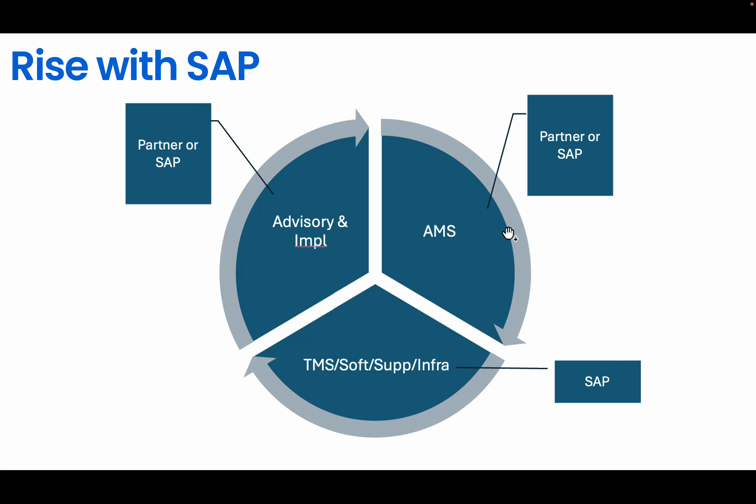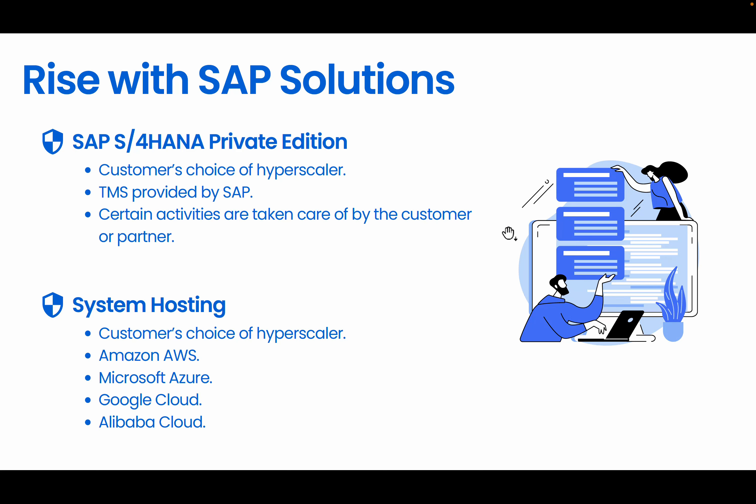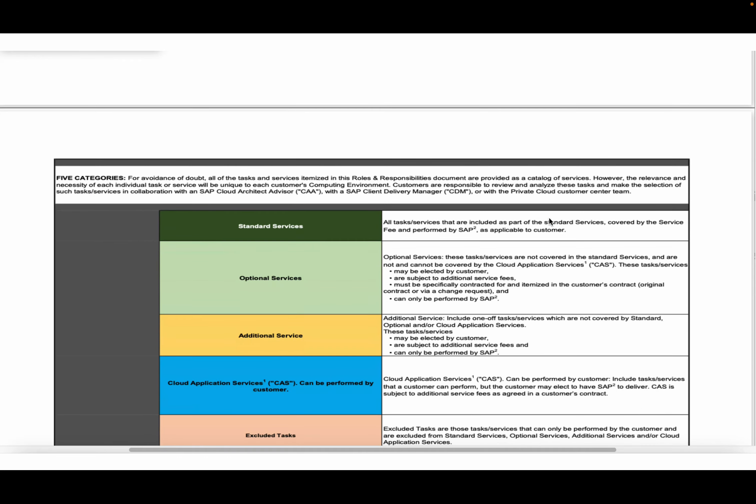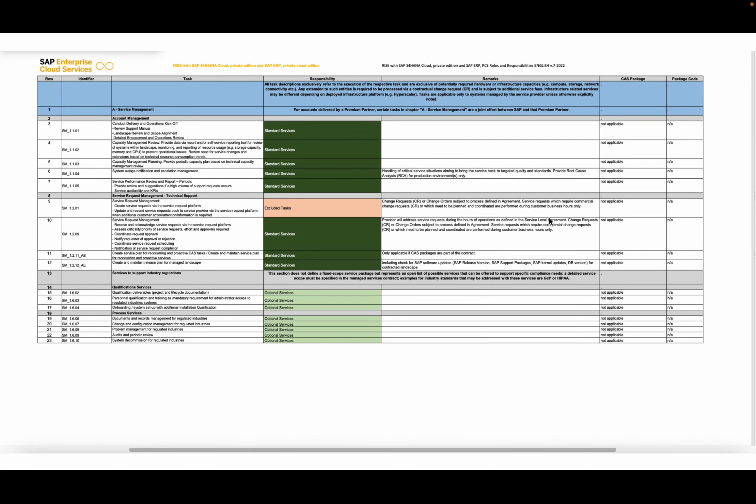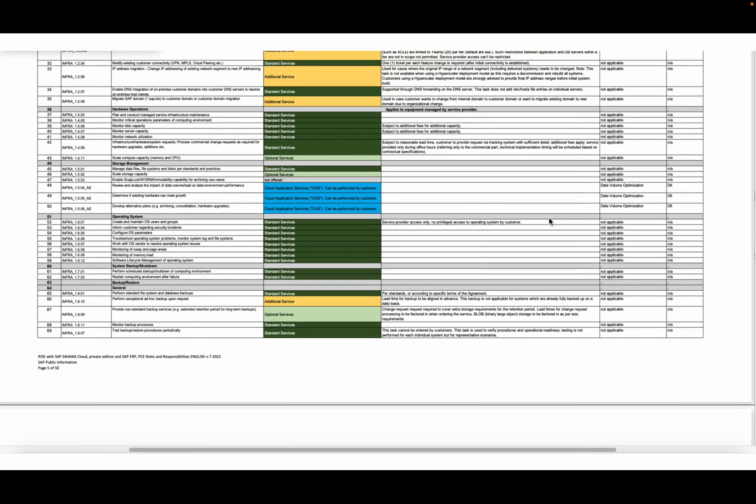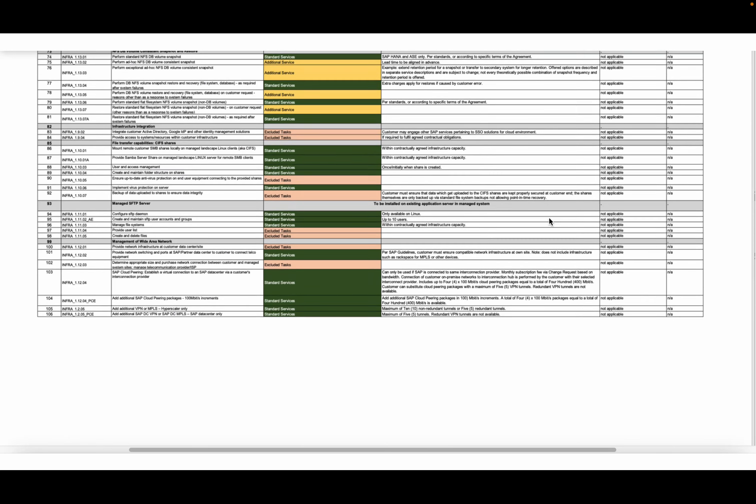In the Rise with SAP model, SAP or the customer's support partner can provide advisory, implementation services, and application managed services. The first solution included in the Rise with SAP contract is SAP S/4HANA Private Cloud Edition — the flagship ERP product of SAP. SAP will host S/4HANA in a hyperscaler of the customer's choice and take care of technical activities like system installation, high availability, disaster recovery setup, system refreshes, client copies, and OS and database maintenance. A full responsibility matrix is available via a link in the video description.